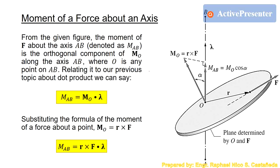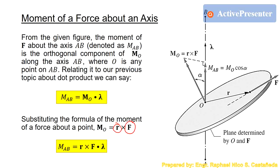Relating this to our dot product topic, M_AB equals the dot product of the moment of the force about point O with the unit vector directed along axis AB. Substituting the formula for moment of a force about a point — which is the cross product of position vector r and force vector F — the moment of a force about an axis is defined by the formula r cross F dot lambda, which comes from the scalar triple product.